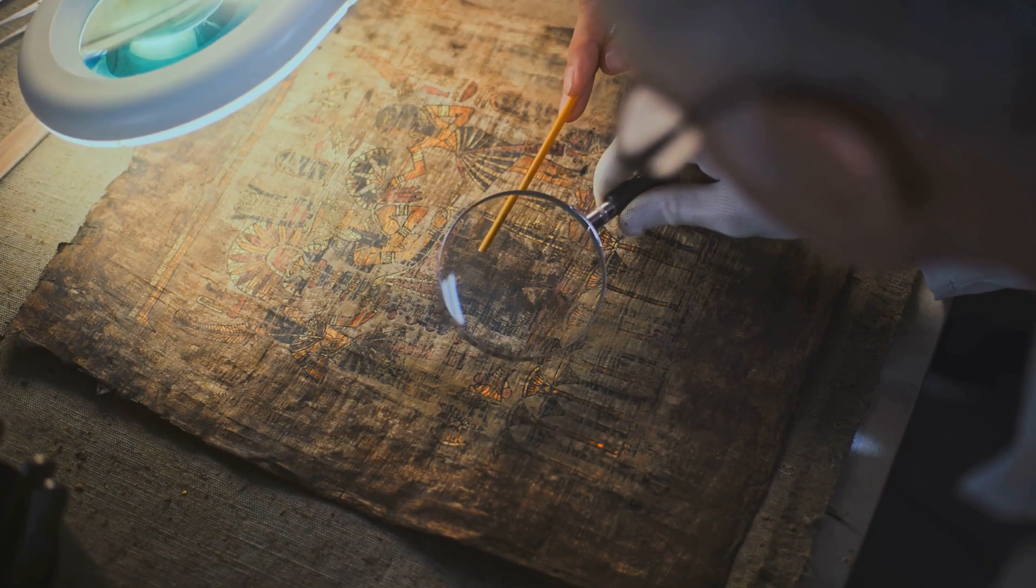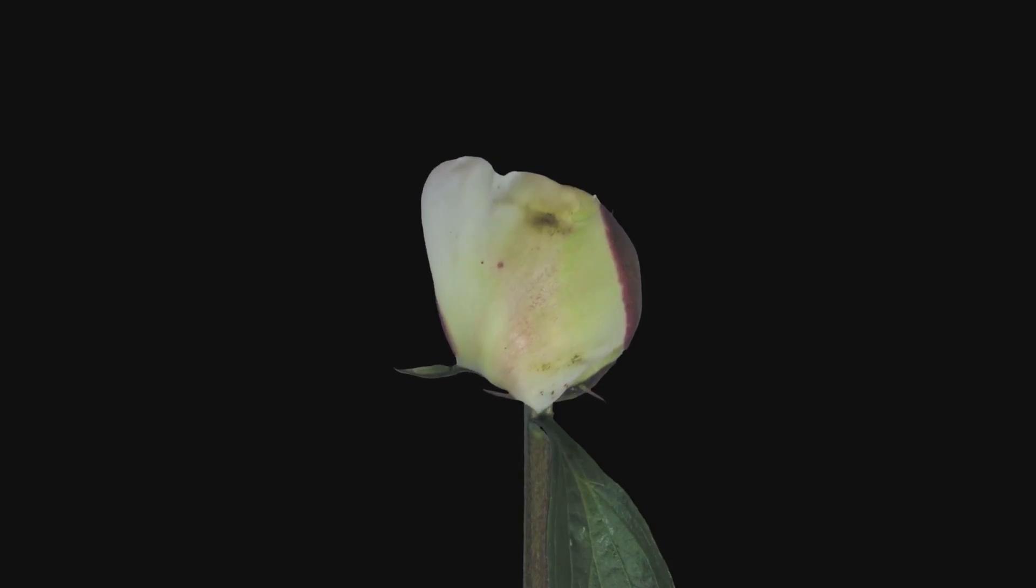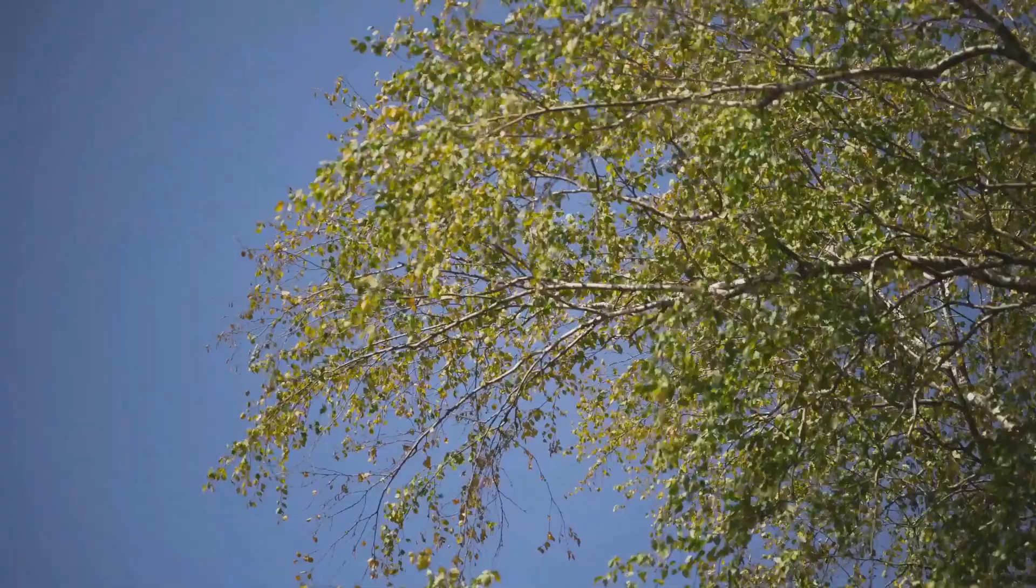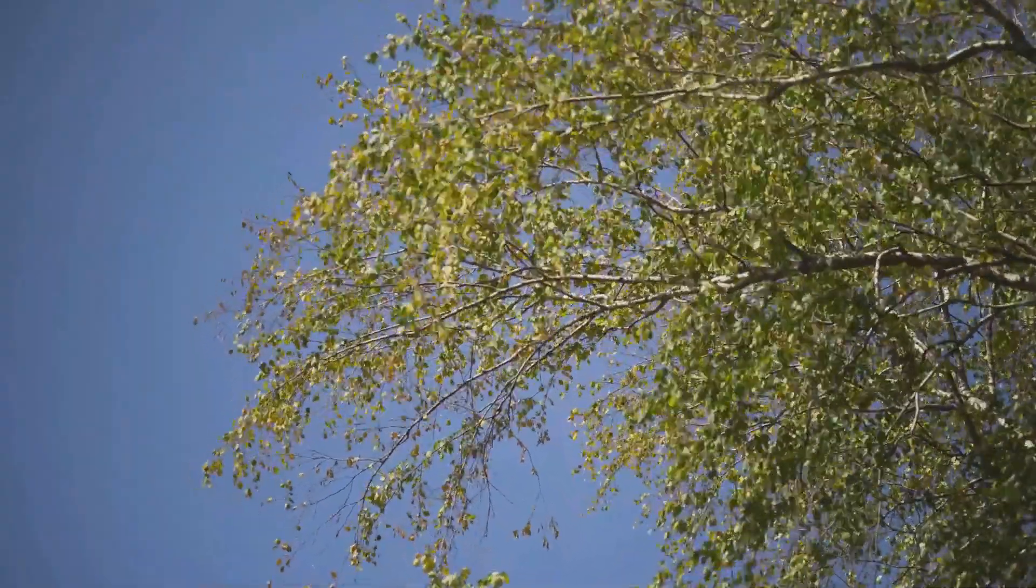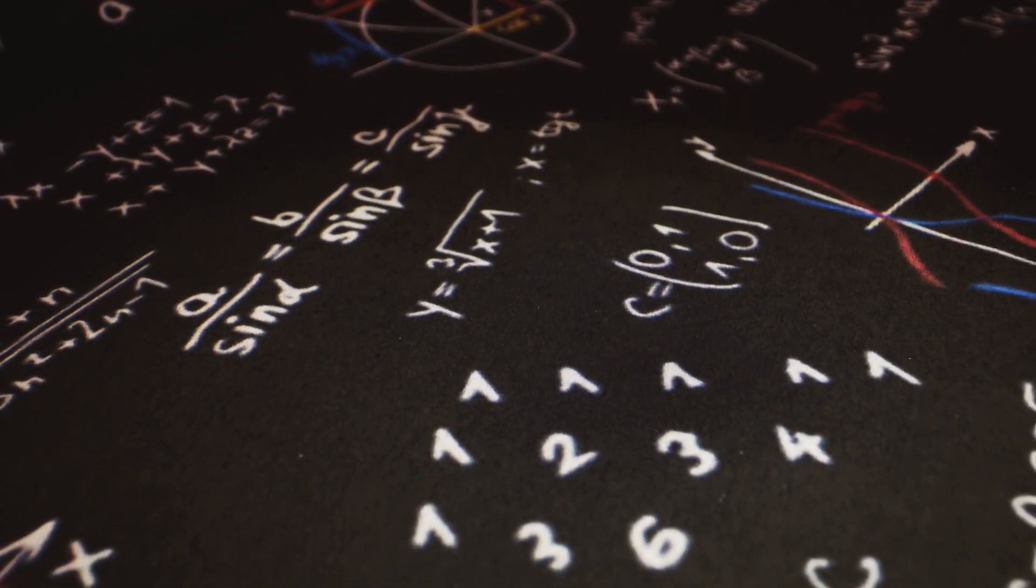Throughout history, humans have been fascinated by patterns in nature. We see them in the arrangement of petals in a flower, the spiral of a seashell, and the branching of a tree. What's remarkable is that these patterns can often be described using mathematical equations.